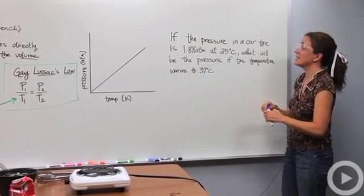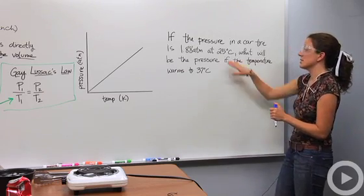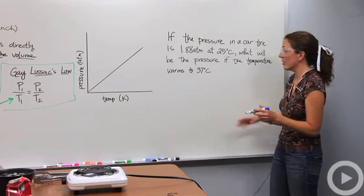So if the pressure in a car tire is 1.88 atm, that's our first pressure, at 25 degrees Celsius, there's our first temperature. What will be the pressure if the temperature warms up to 37 degrees Celsius?